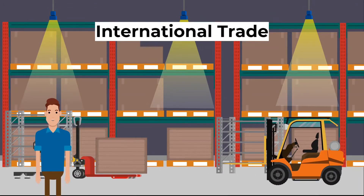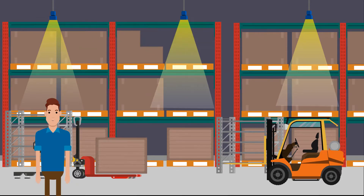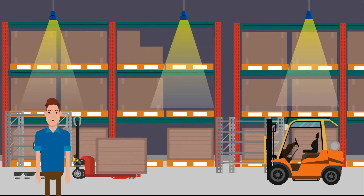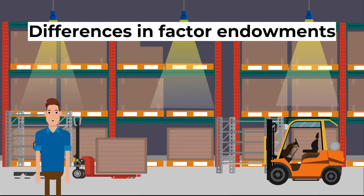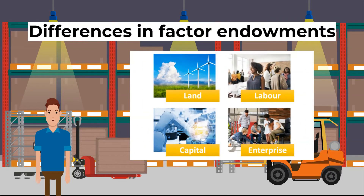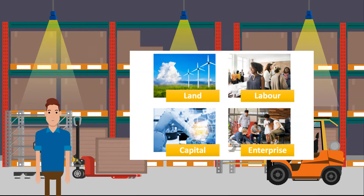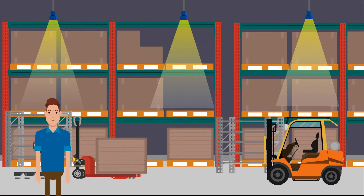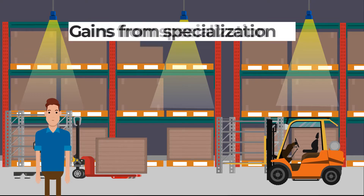Countries benefit from producing goods in which they have a comparative advantage and trading them for goods in which other countries have a comparative advantage. Other reasons for trade include differences in factor endowments — countries have different amounts of land, labor, and capital. Saudi Arabia may have a lot of oil but not enough lumber; Japan may produce superior technological goods but lacks many natural resources.